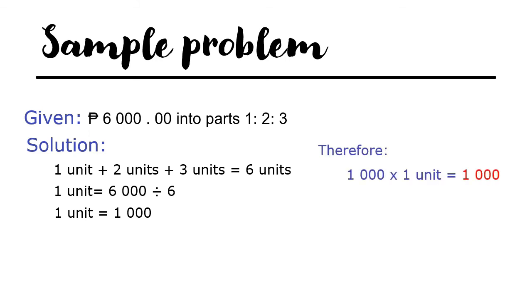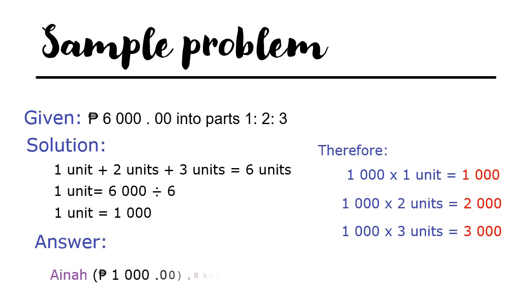Therefore, 1,000 times 1 unit is 1,000. 1,000 times 2 units is 2,000. 1,000 times 3 units is 3,000. Aina will get 1,000 pesos, Rian will get 2,000 pesos, and Matthew will get 3,000 pesos.